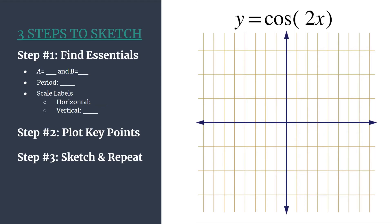First we want to find the essentials, that's step one. So we'll find a and b, we will calculate the period, and decide what scale labels to use. So remember this method is for any equation that's in the general form y equals a cosine bx. So these are your unshifted cosine graphs, and once you know that it's very clear what a and b will be.